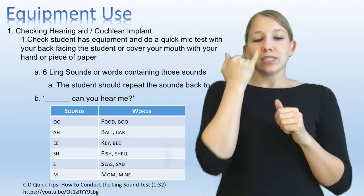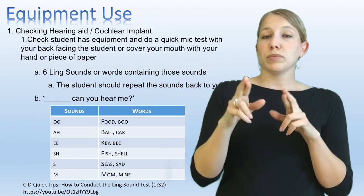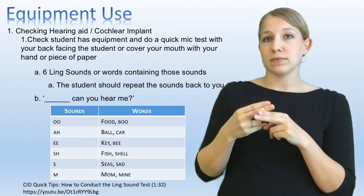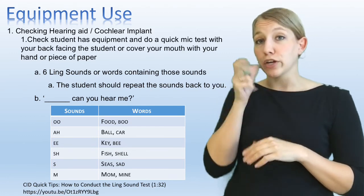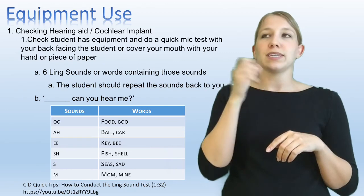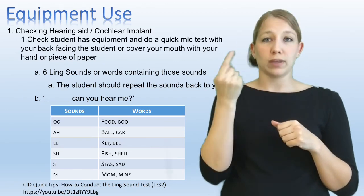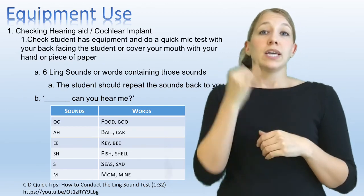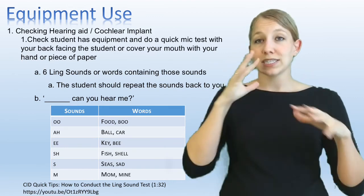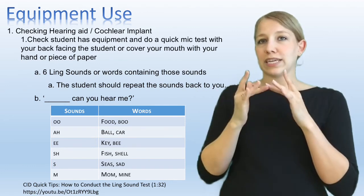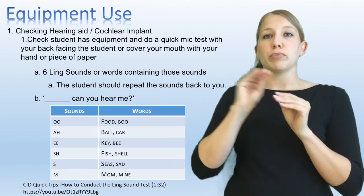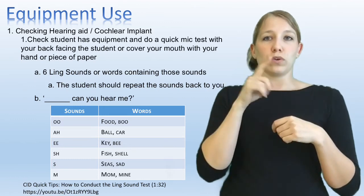Another way to check is if you are across the room and use the microphone to say the student's name — for example, 'Bob, can you hear me?' The student should be able to reply, 'Yes, I can hear you,' or something similar. If you need more instruction on how to do the Ling Six Sound Test, there's a link at the bottom of this page and in the description for this video.